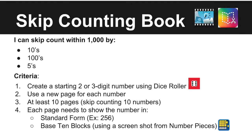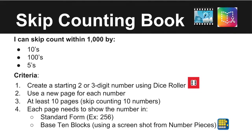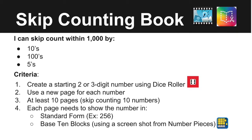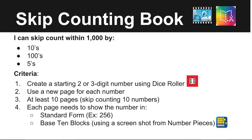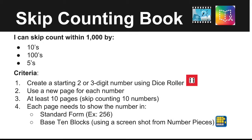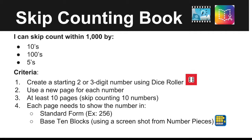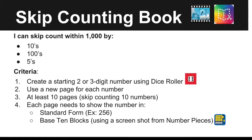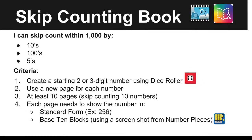The criteria or must for this project include creating a starting 2 or 3 digit number based on the child's readiness, using Dice Roller — another free app — using a new page for each number, and at least 10 pages, which means skip counting 10 numbers in a row. Each page needs to show the number in standard form and base 10 blocks. Students may take a screenshot using Number Pieces, another free app, or use the pen tool to draw their base 10 blocks on the page.